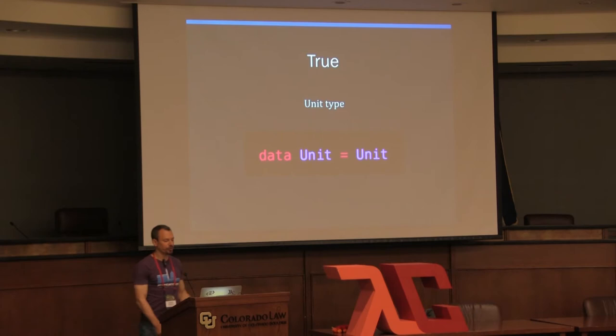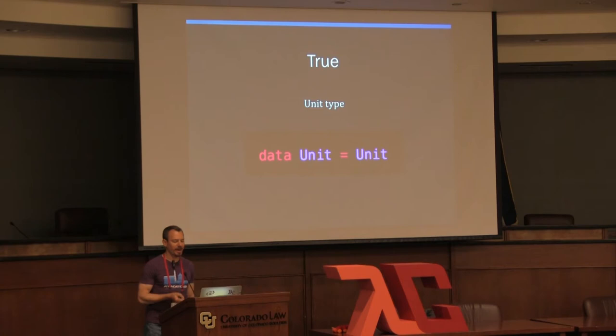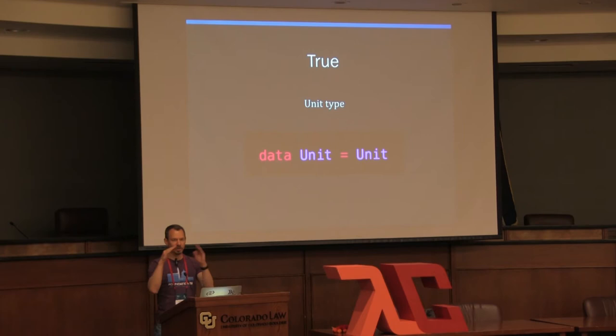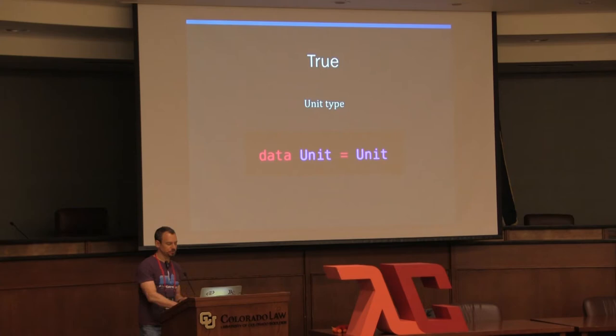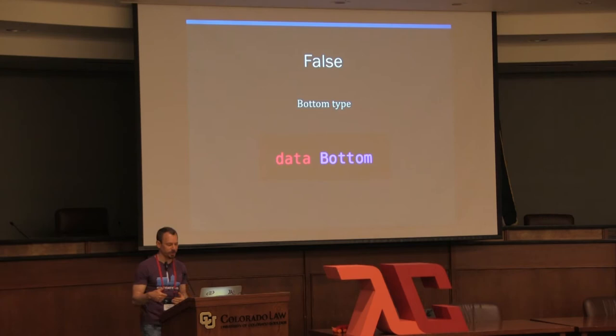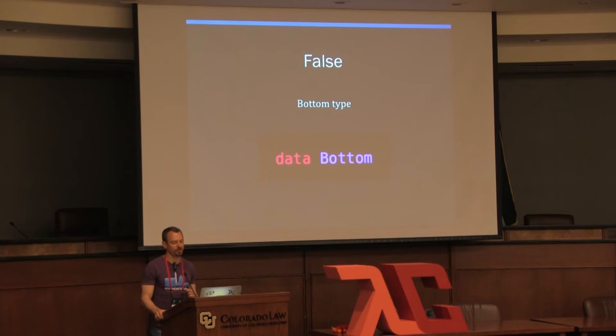False corresponds to a bottom type — a type with no constructors and therefore no inhabitants. Haskell has a Void type sometimes used for this purpose. Often at this point people think they're missing something. The answer is simple: the proposition corresponding to a given type is 'this type is inhabited.' Using set-theoretic intuition, it's 'this set is not empty.' A type is inhabited if and only if the corresponding proposition is true.